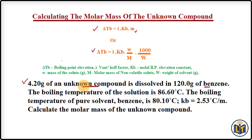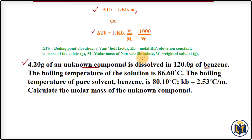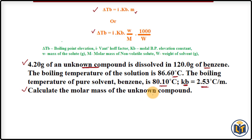The boiling temperature of the solution is 86.60°C, and the boiling point of pure benzene (the solvent) is 80.10°C. KB, the boiling point elevation constant of the solvent, is also given. The question asks us to calculate the molar mass of the unknown compound.